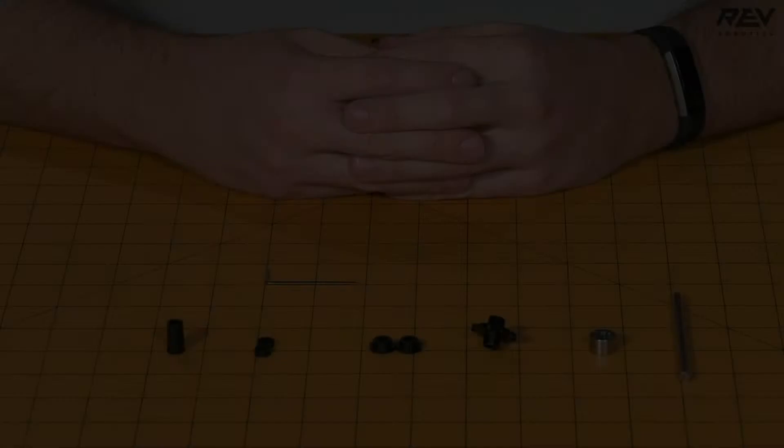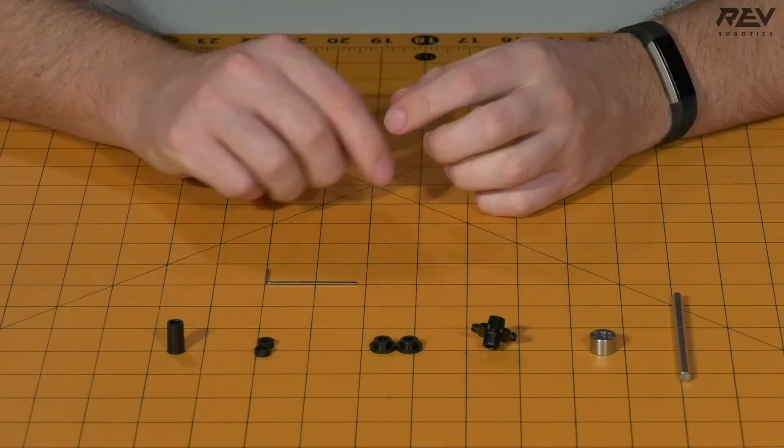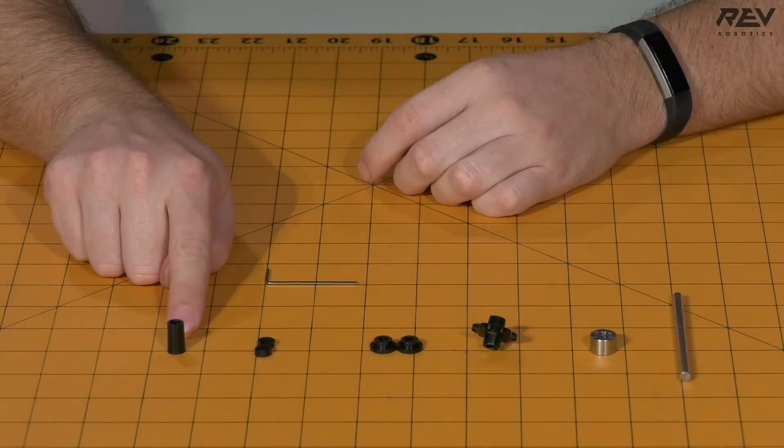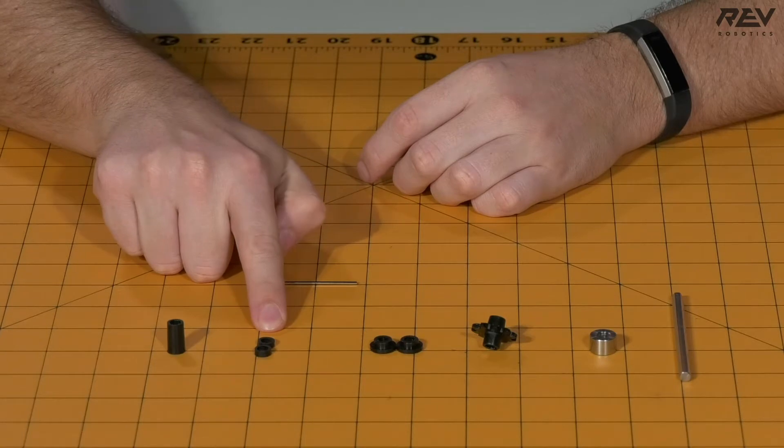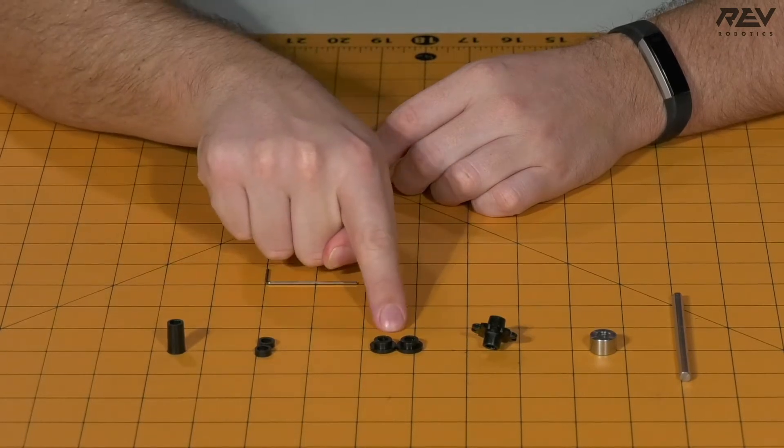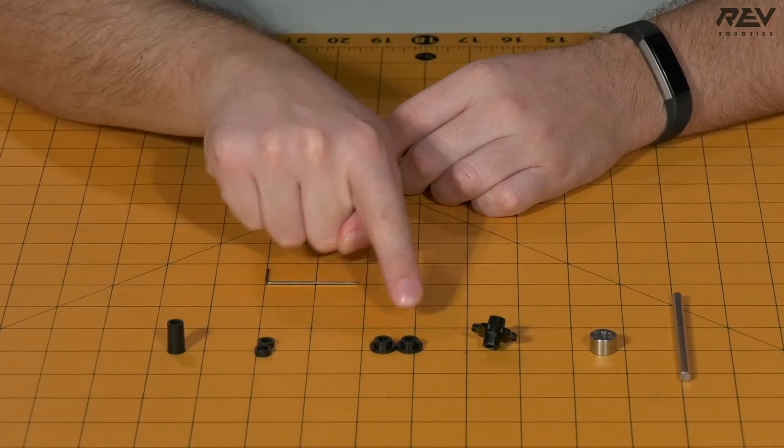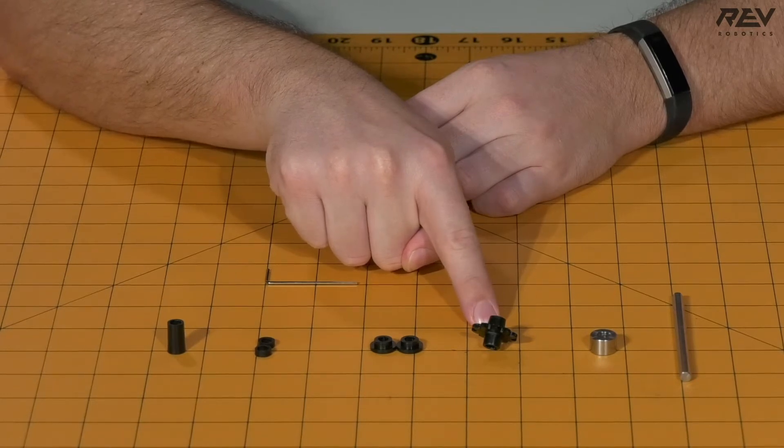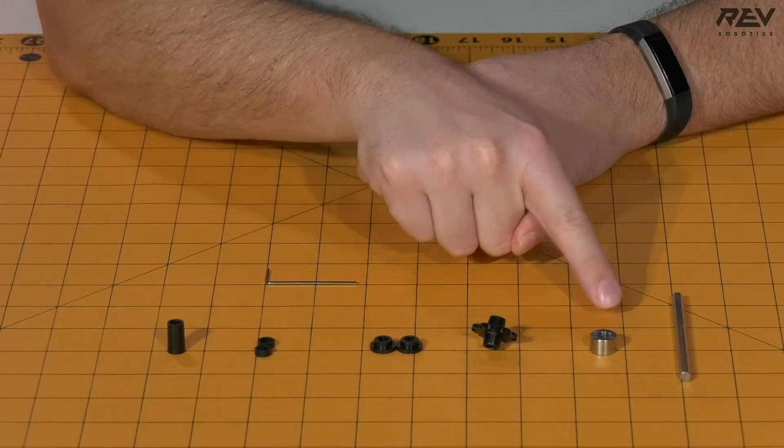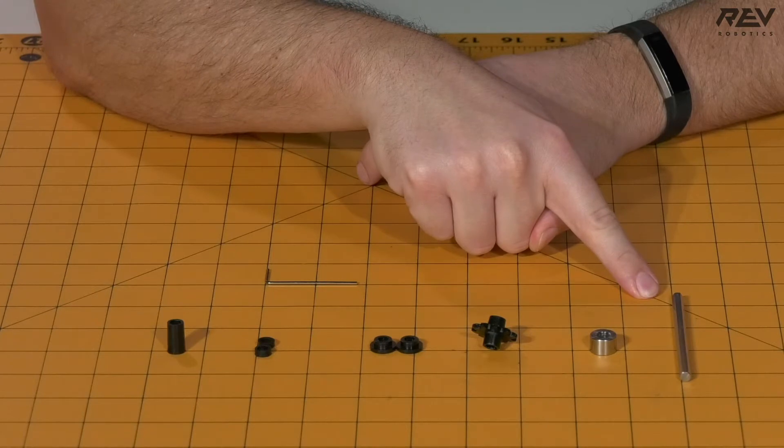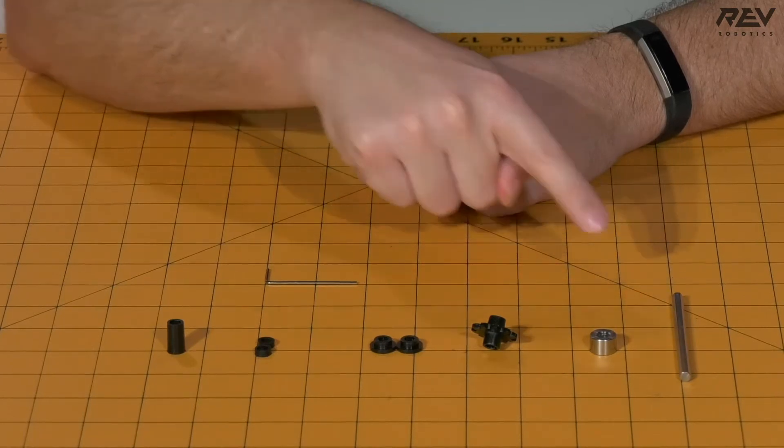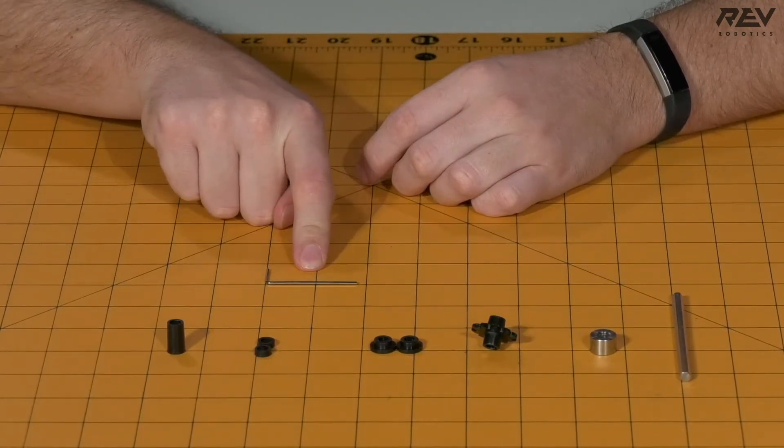We are building the single sprocket shaft assembly. For this step, you will need one 15mm spacer, two 3mm spacers, two short through-bore bearings, one 10-tooth number 25 sprocket, a shaft collar, a 90mm length of 5mm hex shaft, and a 1.5mm Allen wrench.